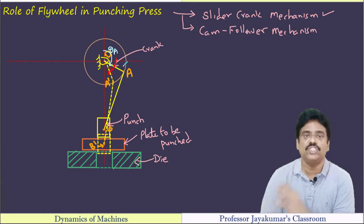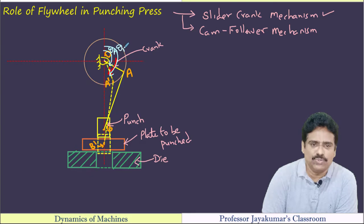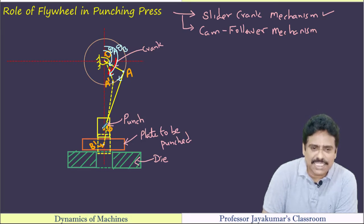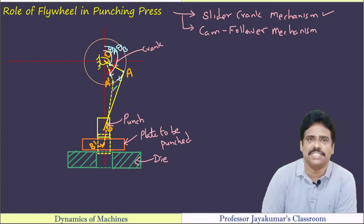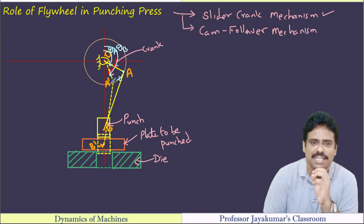When the angle is theta A, the crank pin will be at point A — it will start commencing the punching operation. When the crank moves to angle theta B, it has moved from point A to point A dash, and correspondingly from B to B dash, meaning it has penetrated through the plate. So punching operation will be completed at point A dash. From A to A dash, punching operation is completed: at point A, punching begins; at point A dash, punching ends.